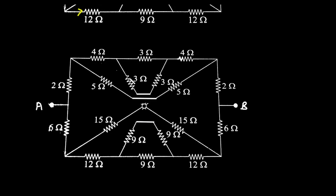Now here this 15 ohm and this 15 ohm will be separated like this. Now here we can see we can easily solve this network.